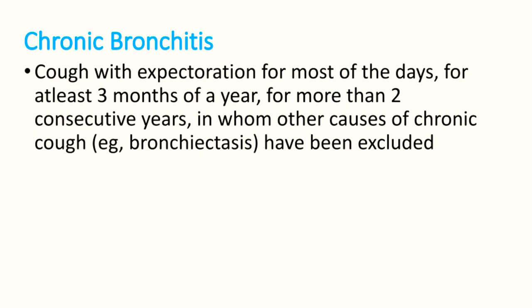These changes predominantly occur in the smaller airways of the lungs. There are two types of COPD: chronic bronchitis and emphysema. By definition, chronic bronchitis is characterized by cough with expectoration on most days for at least three months of a year for more than two consecutive years. Only then can it be diagnosed as chronic bronchitis.